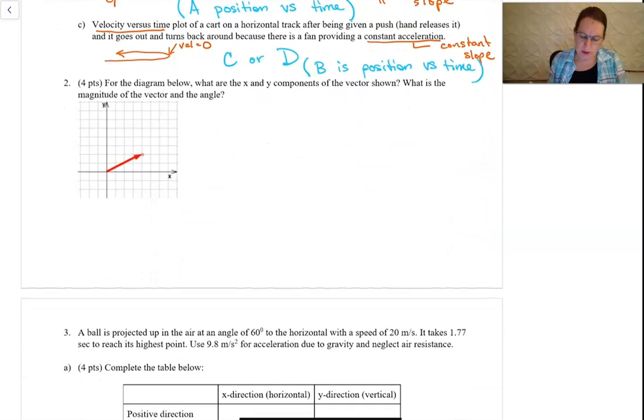For this next one, we're asked to find the X and Y components. So the X component, it's four units, one, two, three, four. The Y is two units, one, two.